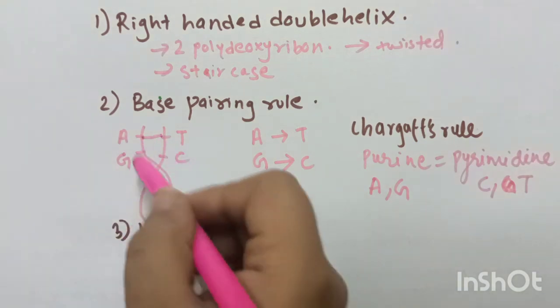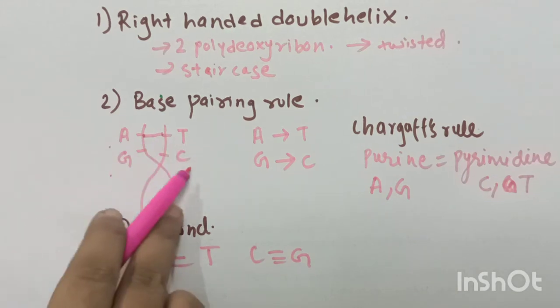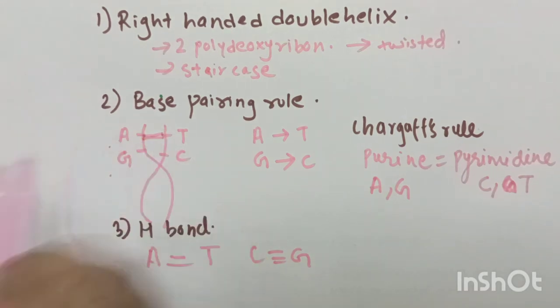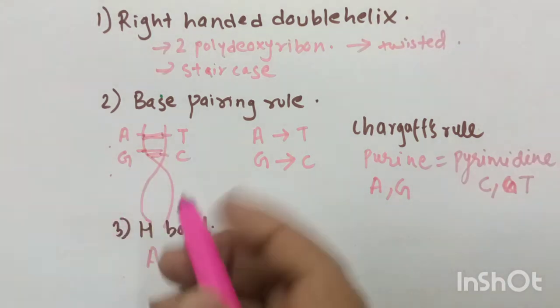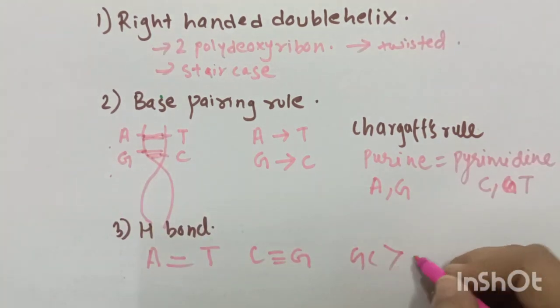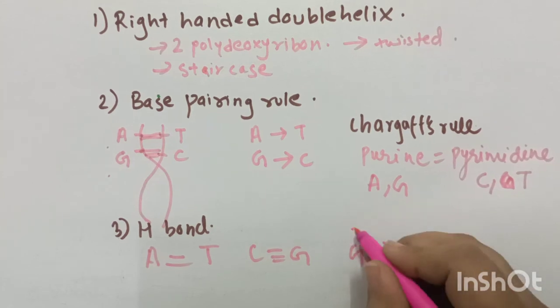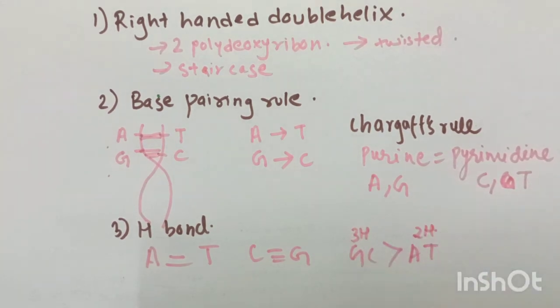These 2 are complementary. A pairs with T, G pairs with C. This pairs by 2 hydrogen bonds and this pairs by 3 hydrogen bonds. The GC bond is stronger than AT bond because there are 3 hydrogen bonds versus 2.